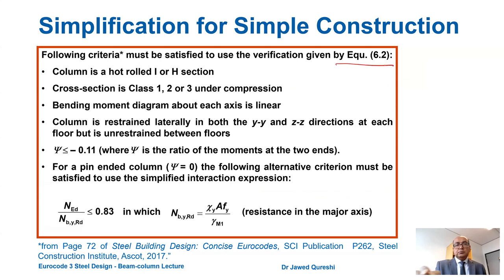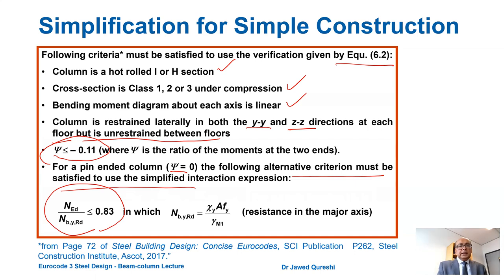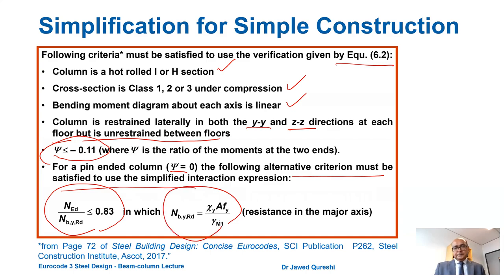Equation 6.2 can only be applied when the column is a hot-rolled I or H section, the cross section is Class 1, 2, or 3 under compression, the bending moment diagram is linear, and the column is laterally restrained in the y-direction at each floor but unrestrained between floors. The psi value must be less than or equal to minus 0.1. For pin-ended columns where psi equals 0, the alternative criterion NEd / NbZ,Rd must be less than or equal to 0.83, where NbY,Rd equals chi_Y × A × fy / gamma_M1.